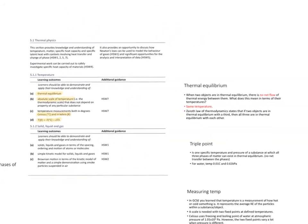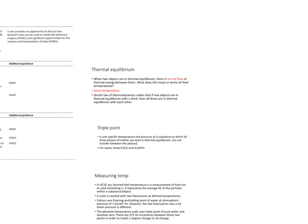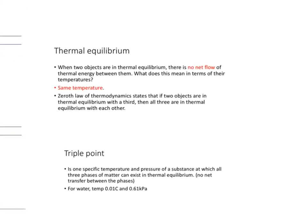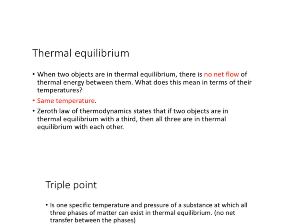To start with, I'm going to go to thermal equilibrium. What thermal equilibrium basically states is that when you have two objects that are in thermal equilibrium, there will be no net flow of thermal energy between them. Now thermal energy, remember — you've learned it in your GCSEs — is a form of energy store, and that is based partly on the temperature of the body.